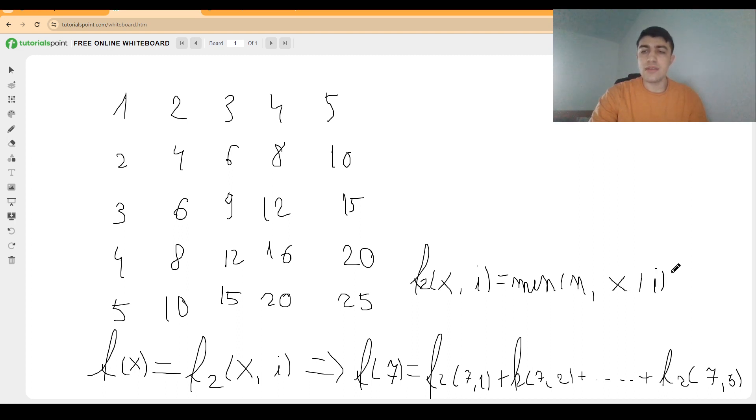And the reason why this happens is that on line i we know the rate at which we increase the values. For example, on the second line if we want to compute f(7, 2) then it's going to be 3, as we have 3 values that are smaller than 7 and the fourth one would already be bigger. And the rate of increase is always i.